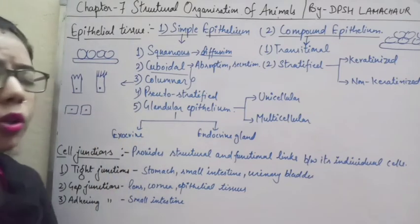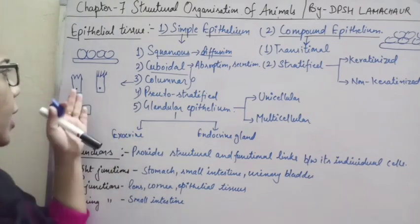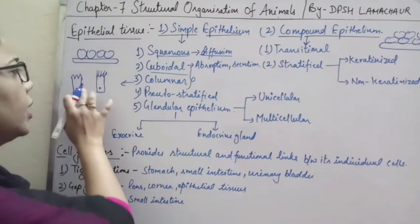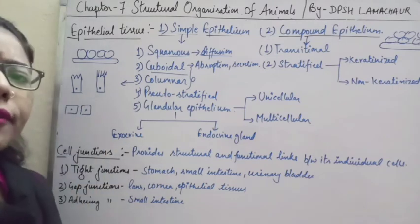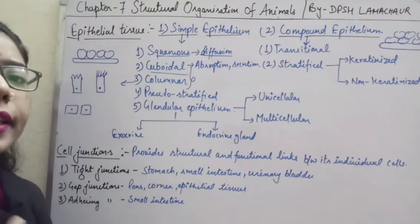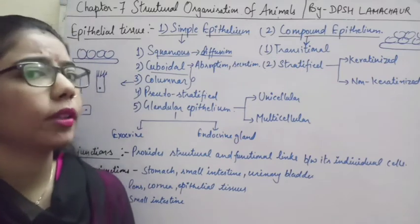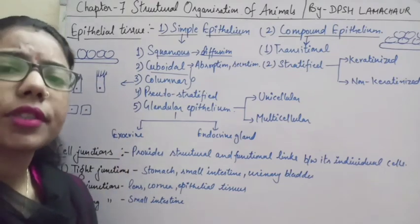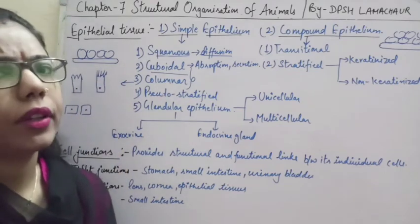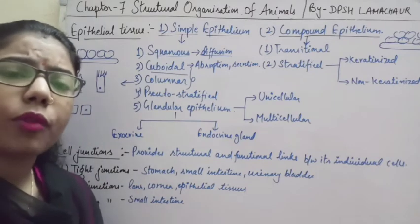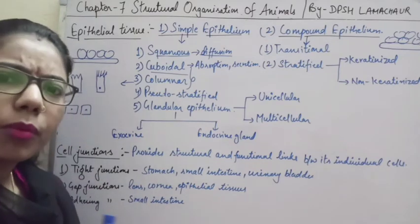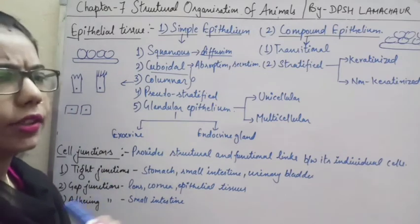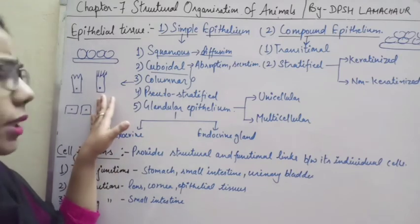Cuboidal or columnar epithelium can have modifications like a brush-bordered surface, which has microvilli that increase the surface area for proper absorption. Cilia can also be present; cilia are responsible for locomotion and movement in only one specific direction.